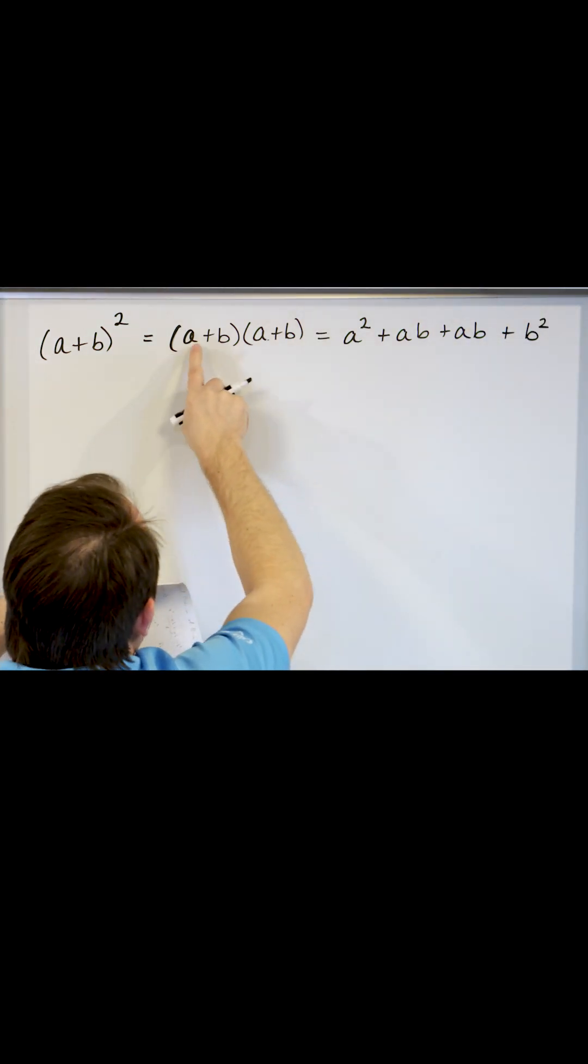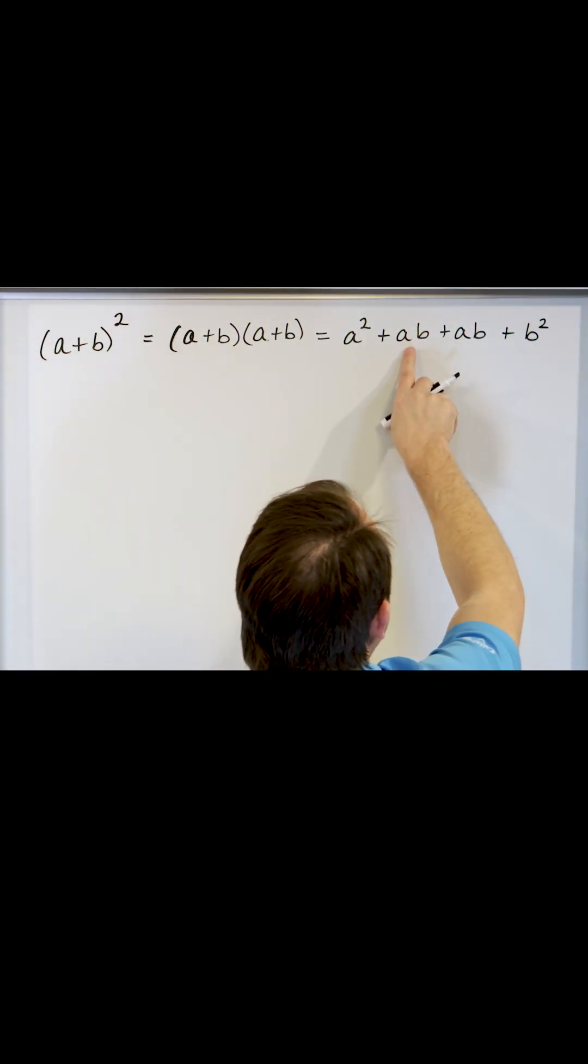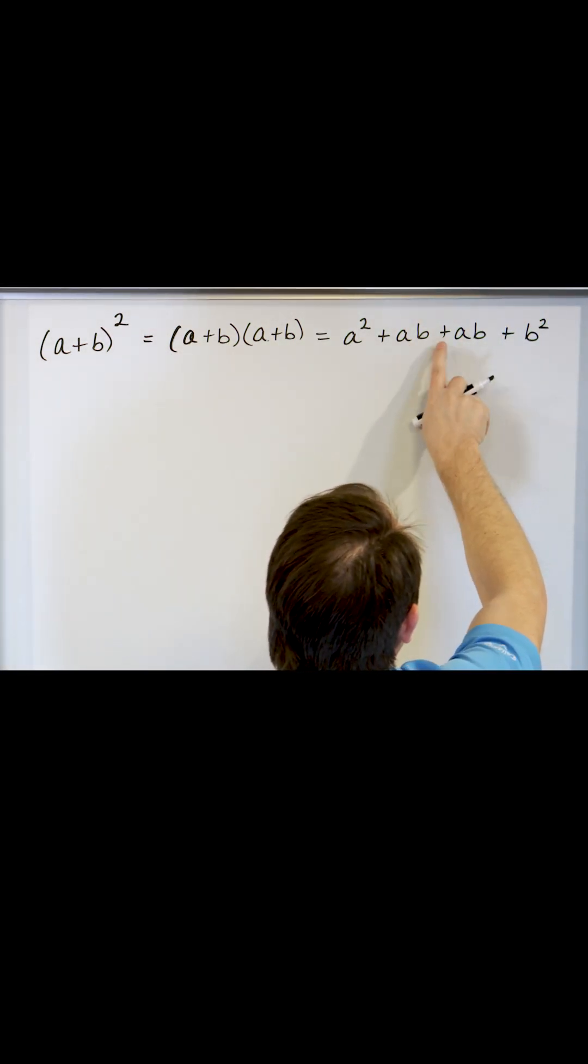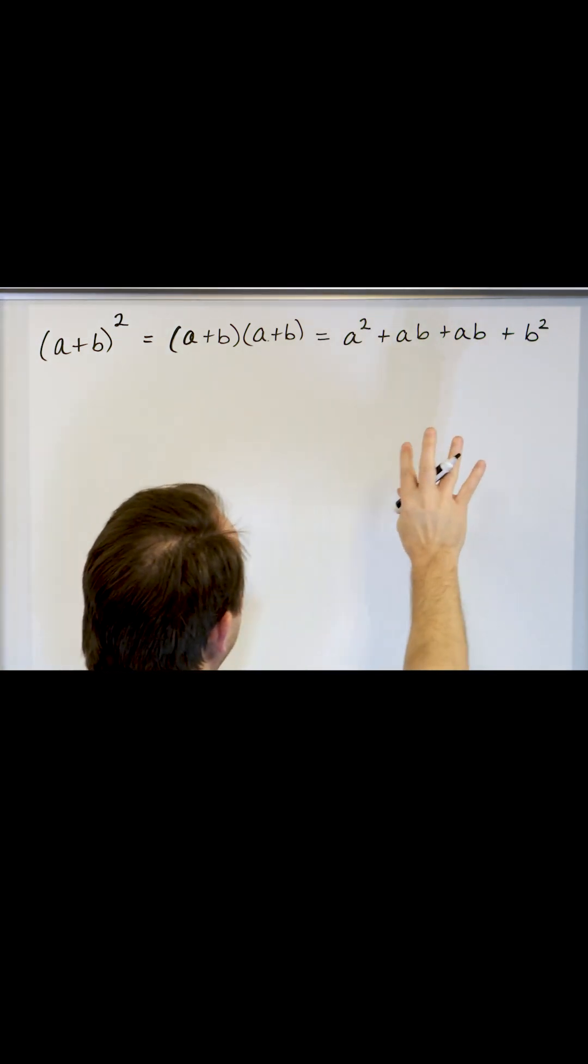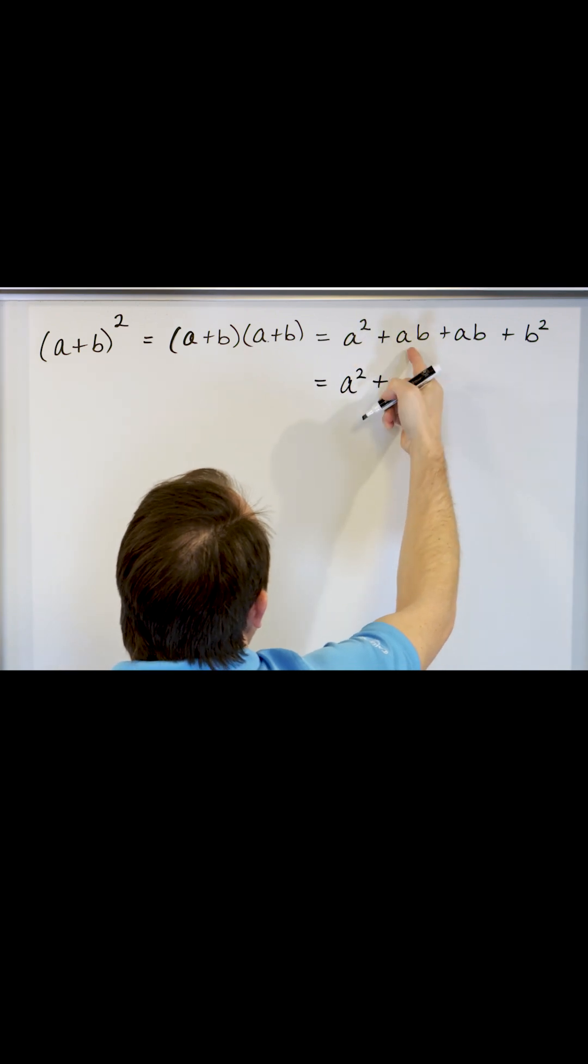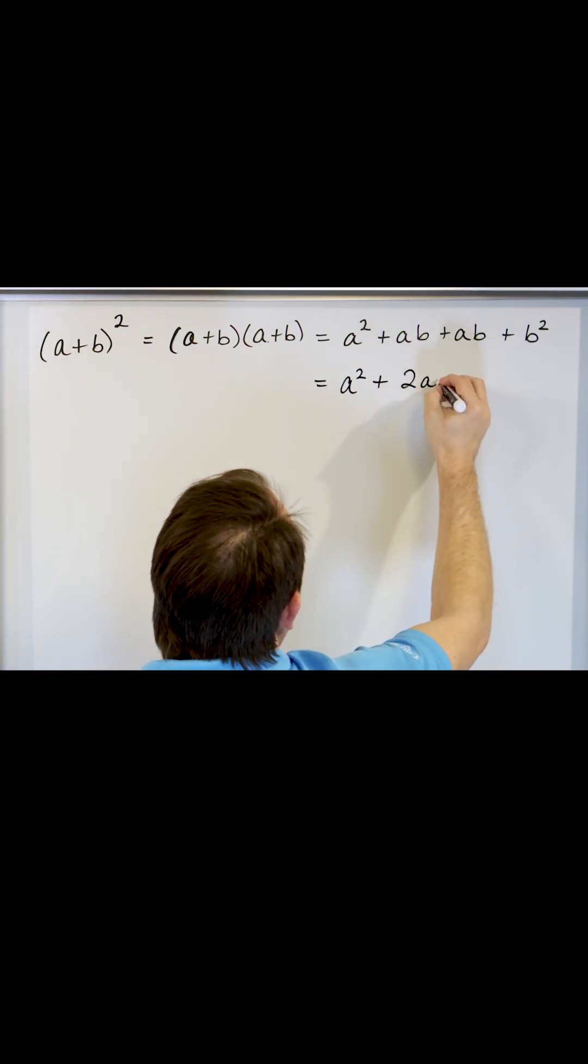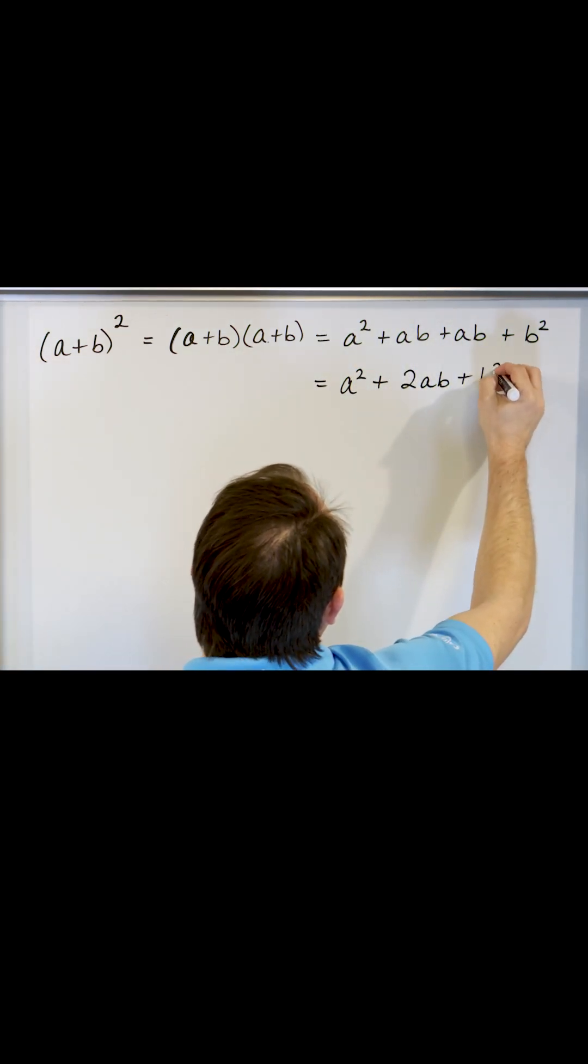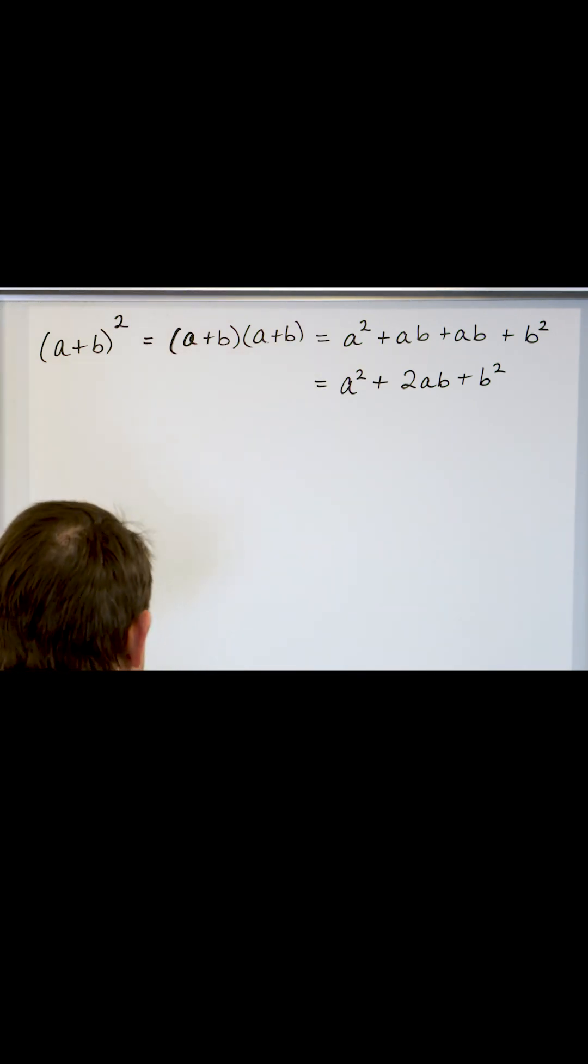This is exactly foil. But you notice that this term matches this term. Now they're both positive so they don't go away, they don't cancel. However, what we get is a squared plus ab plus ab gives me 2 times ab plus b squared.